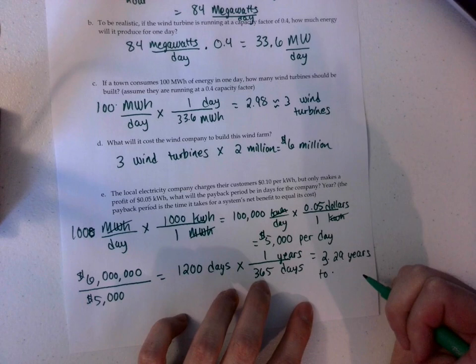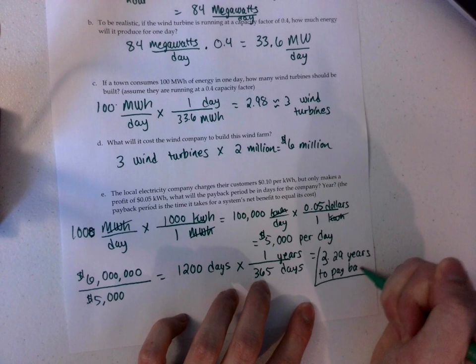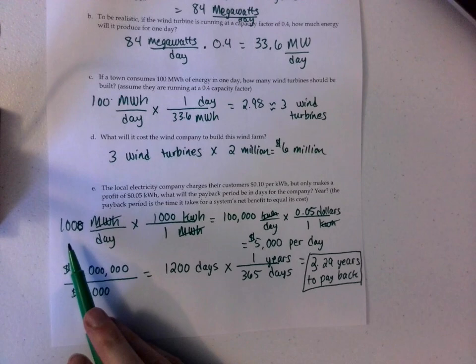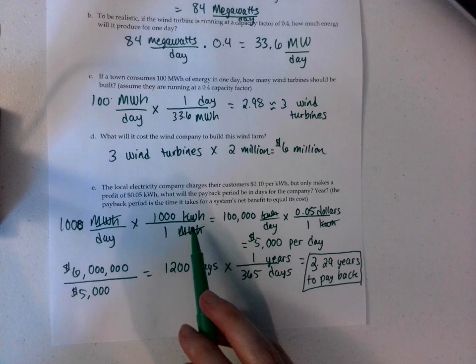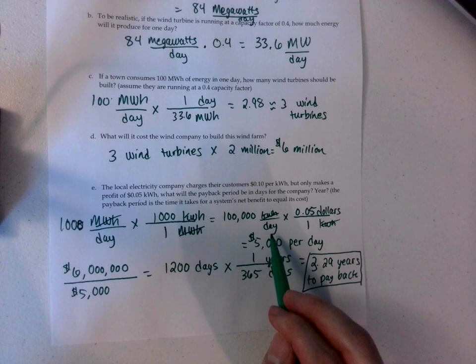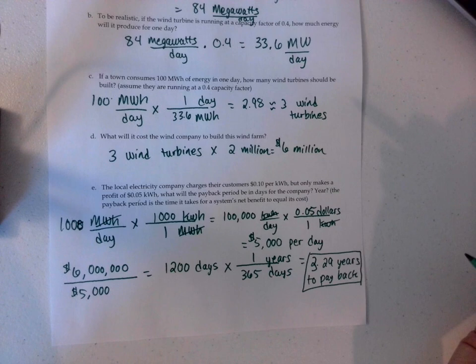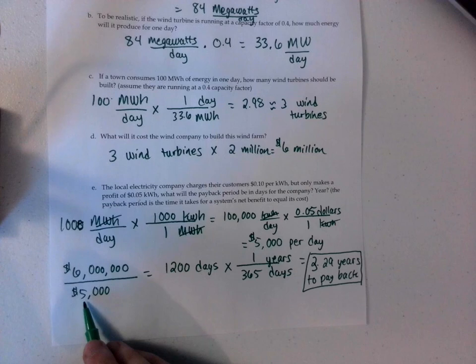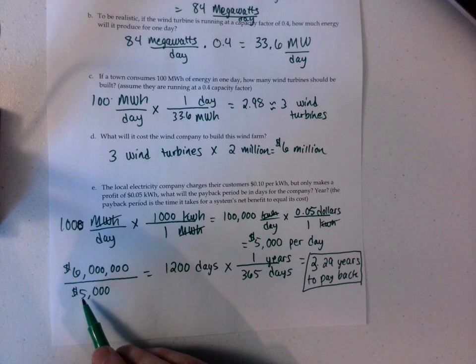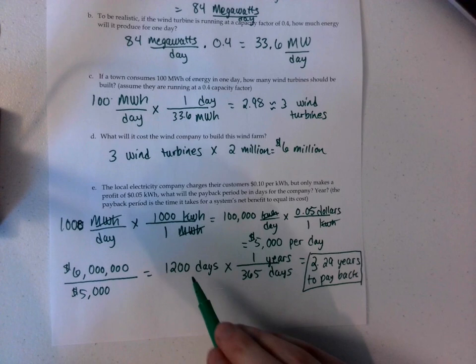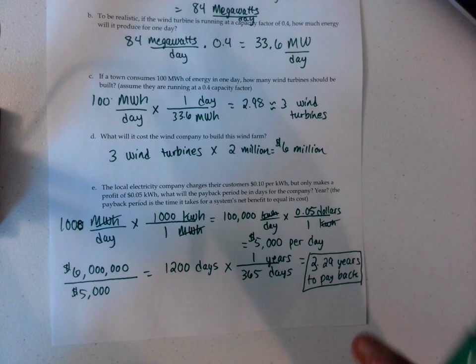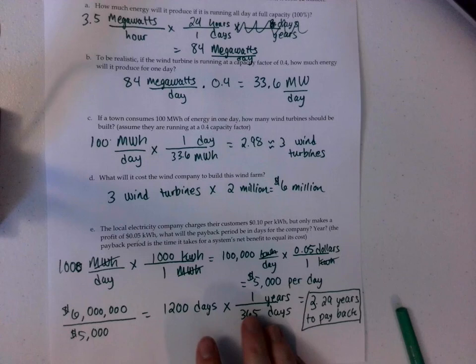To recap: the town uses 100 megawatt hours per day, converted to 100,000 kilowatt hours per day. At $0.05 profit per kilowatt hour they make $5,000 per day. Dividing the $6 million build cost by $5,000 per day gives 1,200 days, which divided by 365 equals about 3.29 years to pay back. If you have any questions, feel free to pause or re-watch. Hope you enjoyed it — have a great day!